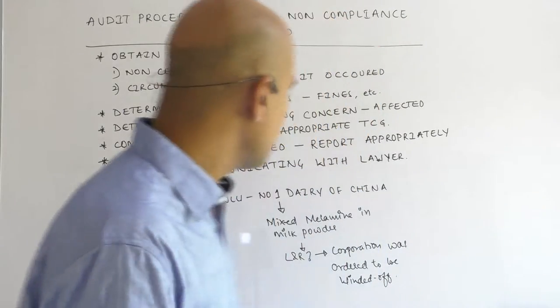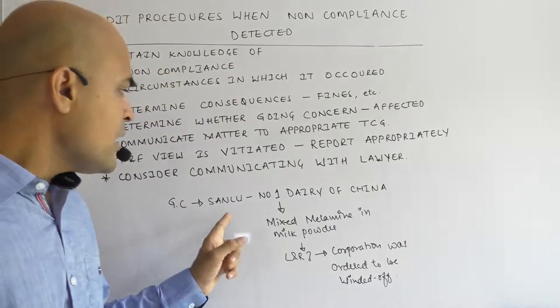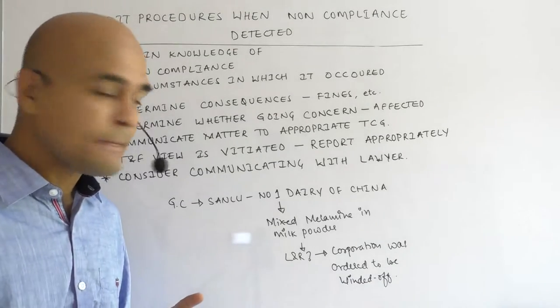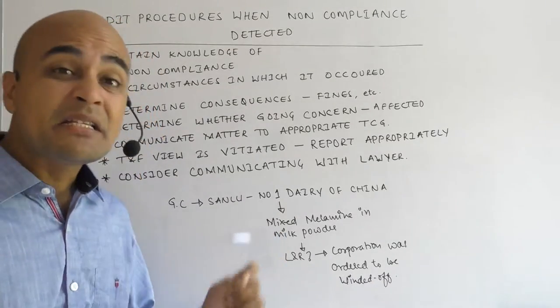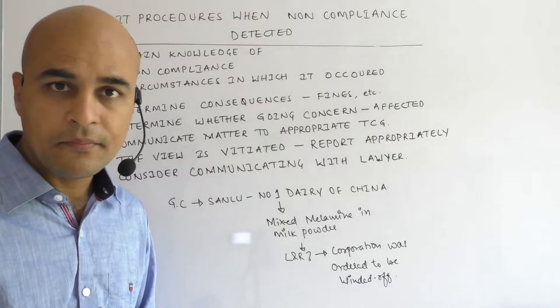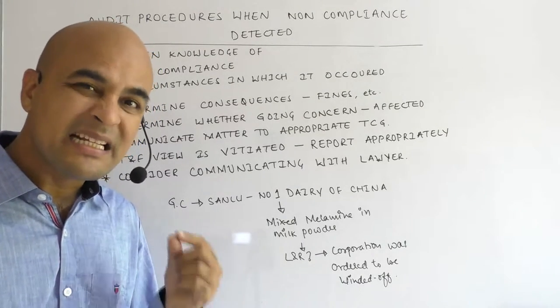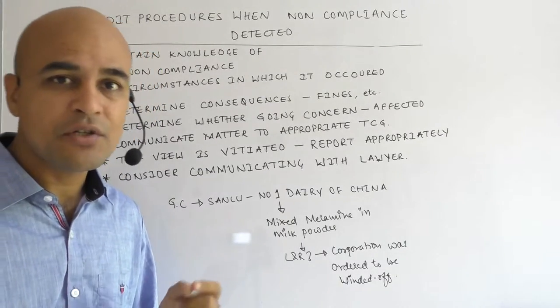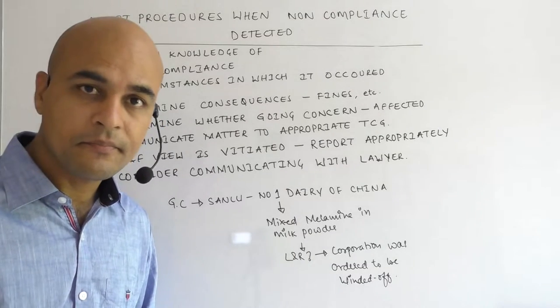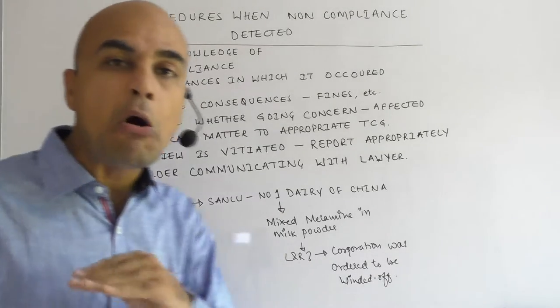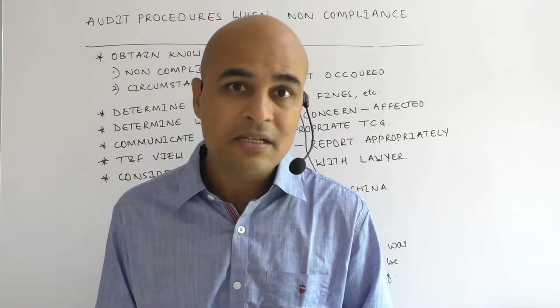Now, when the going concern assumption is affected by non-compliance with laws and regulations, consider this example: San Lu Corporation was the number one Chinese dairy company. What they did was mix melamine into baby milk powder. Because of the mixture of melamine, a lot of newborn babies died within weeks of consuming such contaminated milk. When the matter was revealed, the Chinese government ordered the company's business to be wound off.